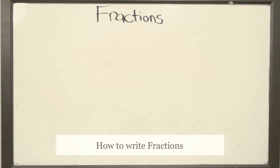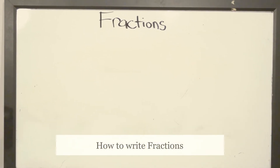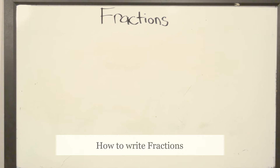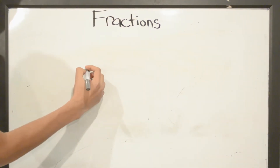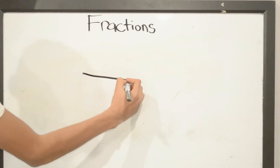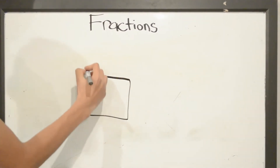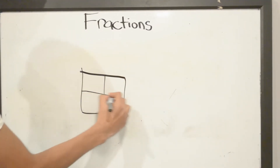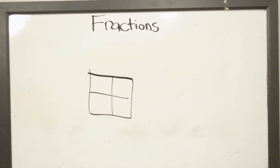Today we're going to be talking about fractions. A denominator is the bottom part of a fraction. For example, if we draw a square here and break it into 4 parts, our denominator will be 4.